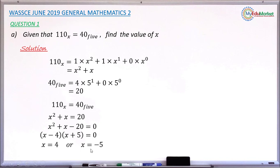it implies that x will take this value minus 5. But remember, x is the base of this first number, which cannot be negative. So therefore, x equals 4. This answers the question.